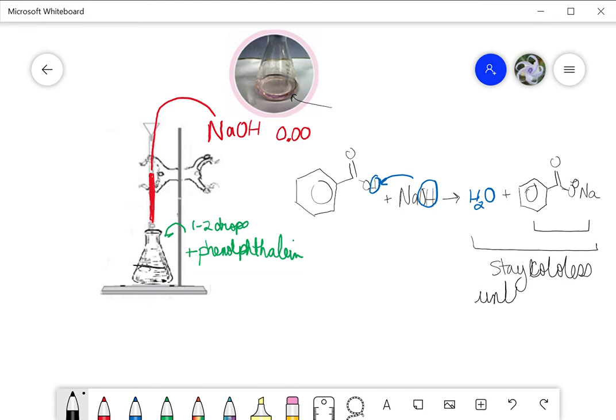This portion, if it's written like this, will stay colorless until we have an equivalence point. So remember, the equivalence point for this balanced equation is going to be a one-to-one ratio between the benzoic acid and the sodium hydroxide.